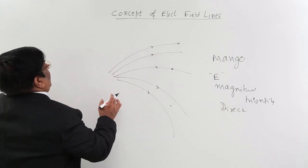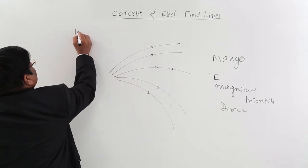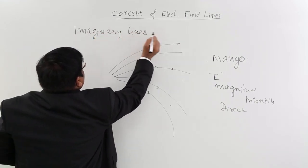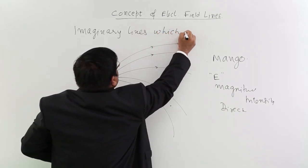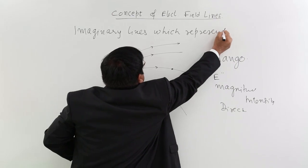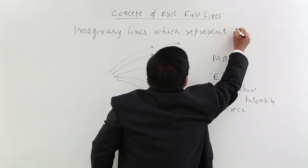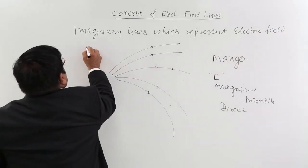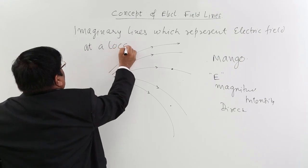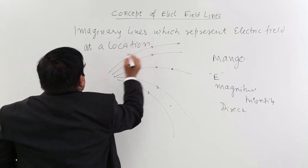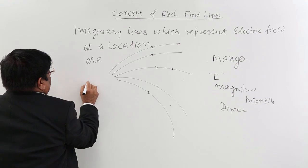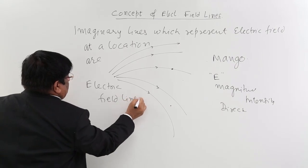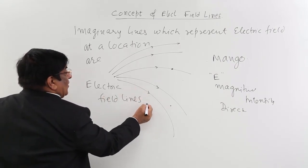So these lines, these lines are virtual, these are imaginary lines which represent electric field at a location, are electric field lines and these lines we draw.